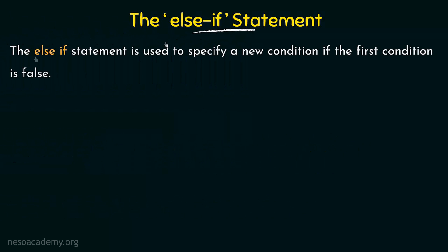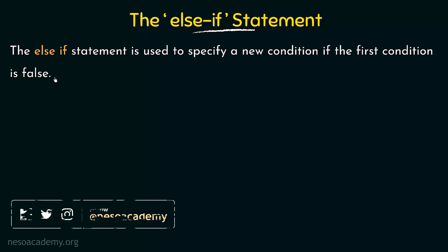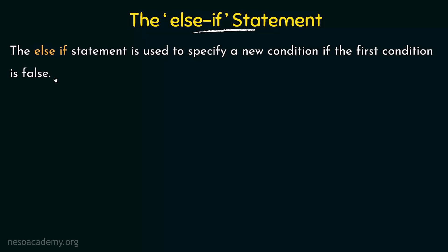The else if statement is used to specify a new condition if the first condition is false. In the previous lecture, when we used if and else, we gave a condition and if it was true the block inside the if statement got executed. If it was not true, the else block executed. But here we are going to have something called else if. We will see the flow and then try to understand its working.